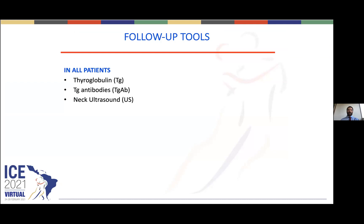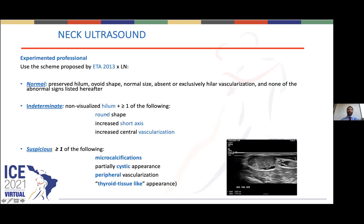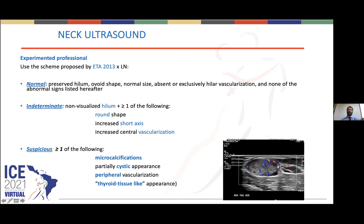In every patient with thyroid cancer, we use thyroglobulin, thyroglobulin antibodies, and neck ultrasound. Other tools are used in specific cases. Neck ultrasound must be performed by experienced professionals. Using the ETA 2013 guidelines scheme, neck ultrasound findings are classified as normal, indeterminate, or suspicious. Suspicious lymph nodes have one or more of the following characteristics: presence of microcalcifications, partially cystic appearance, thyroid tissue-like appearance, or peripheral vascularization.